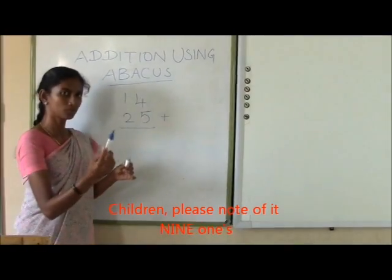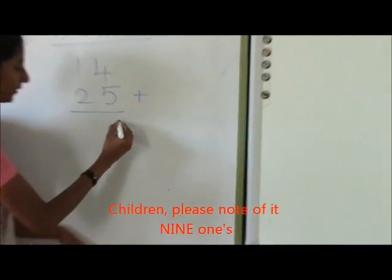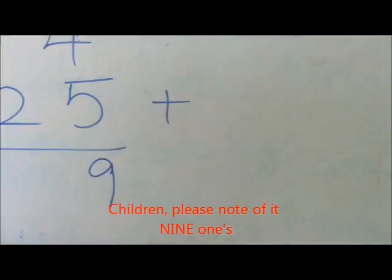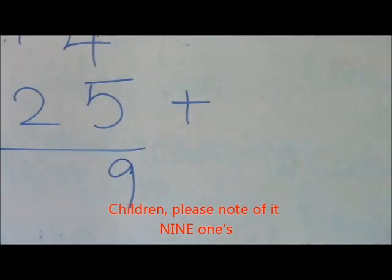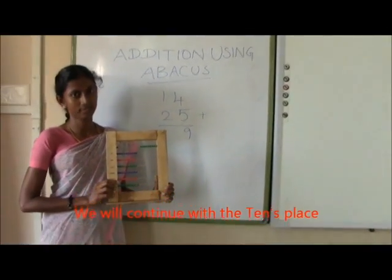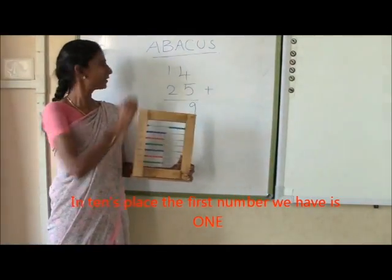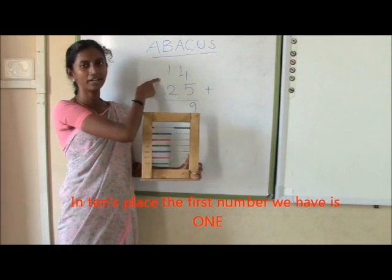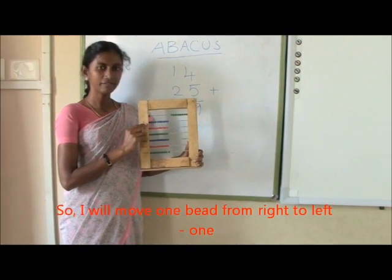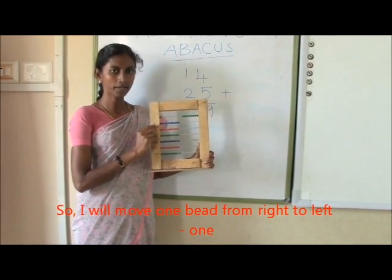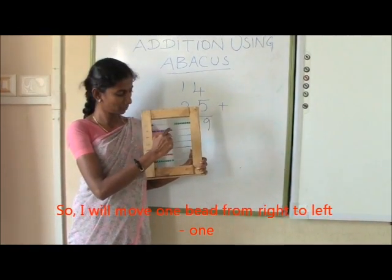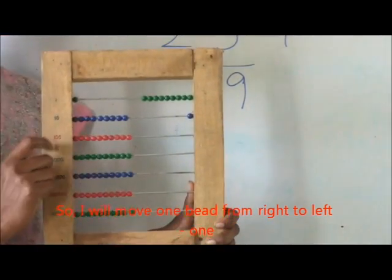Children, please note of it — 9 ones. We will continue with the tens place. In tens place, the first number we have is 1. So I will move 1 bit from right to left — 1 blue bit.